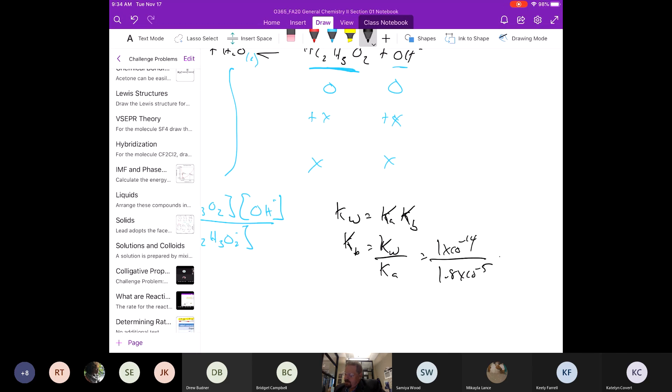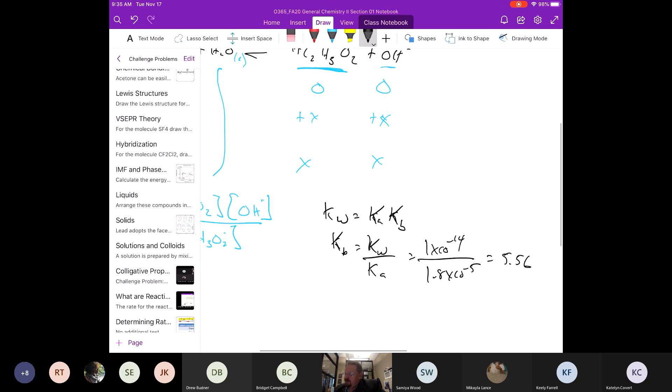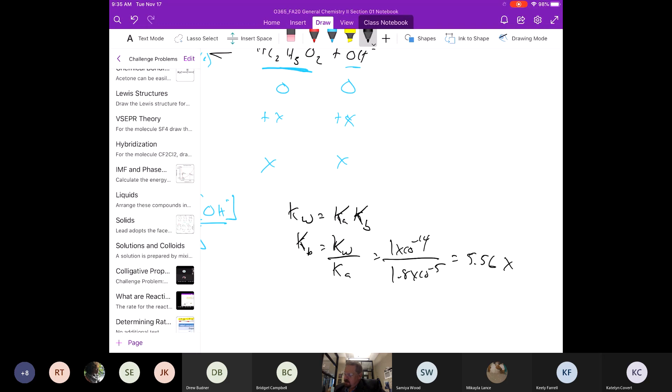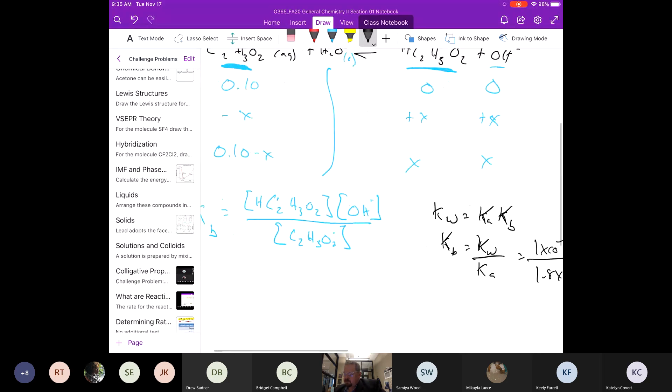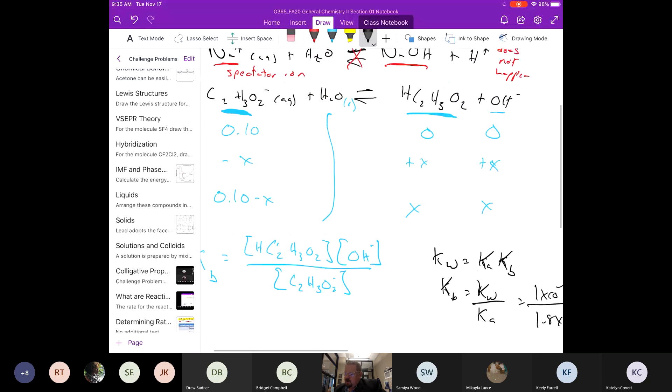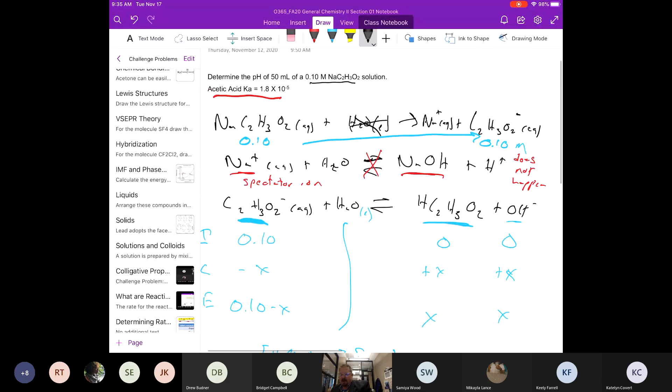When we do that math, we end up with 5.56 times 10 to the minus 10th. So we can say that even if we look at the acid, this weak acid acetic acid, because the K value is less than 1, it's going to be reactant favored. Most of it's going to stay as the protonated form just dissolved.